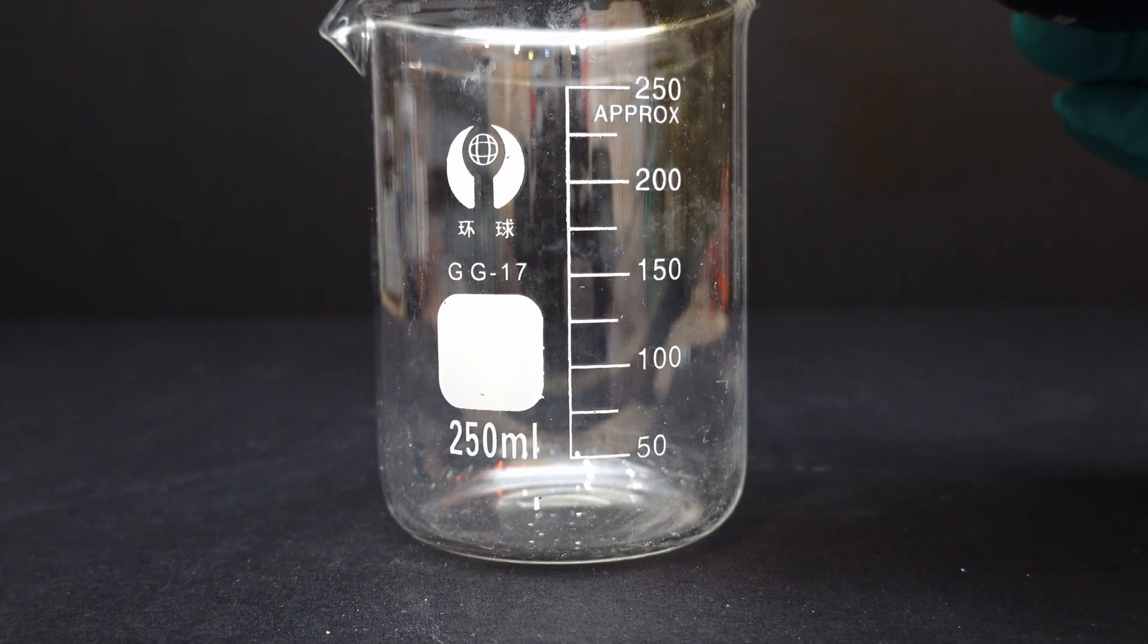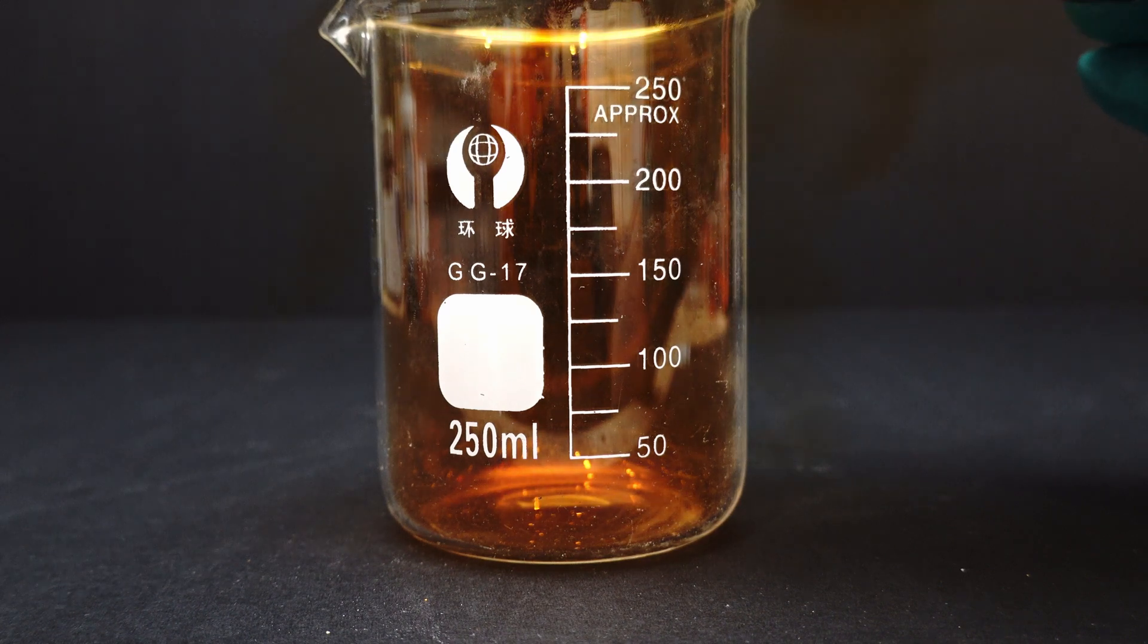Bromine fumes are also denser than air, so when I pour it, you can see all the vapours flowing down like a waterfall of sorts.